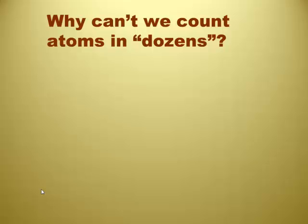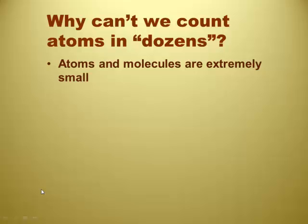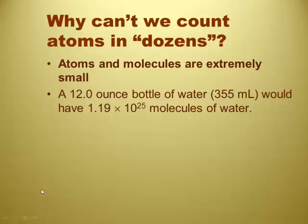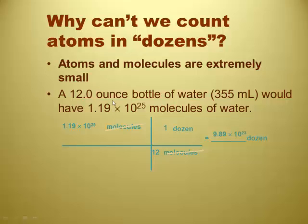So, why is it that chemists don't count atoms in dozens like everyone else counts dozens? It turns out that atoms and molecules are so extremely small that a 12 ounce bottle of water, that's 355 milliliters for those of you in the metric zone, would have 1.19 times 10 to the 25th molecules of water. That's molecules. So, if we try to count that in dozens, the math works this way. We take 1.19 times 10 to the 25th molecules, and we'd say that 12 molecules is a dozen, and we'd wind up finding out that, in terms of dozens, it has 9.89 times 10 to the 23rd dozen molecules.